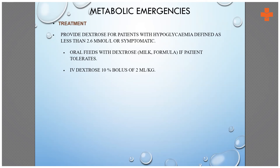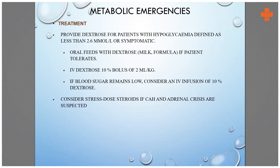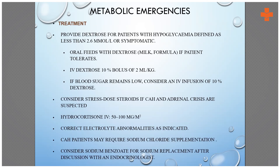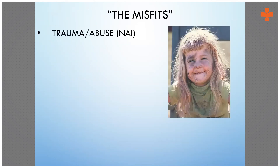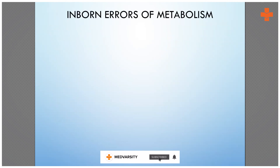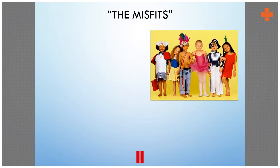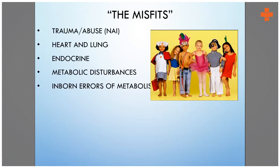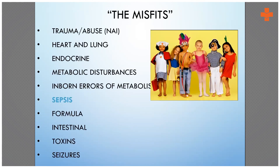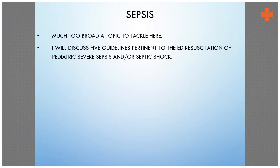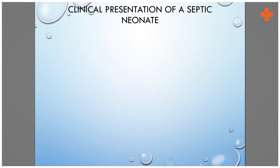Treatment: dextrose to address hypoglycemia, steroids as discussed, and correction of electrolyte abnormalities as indicated. Now moving to inborn errors of metabolism — we've already discussed this so we won't go into detail. The most important topic coming up is sepsis.